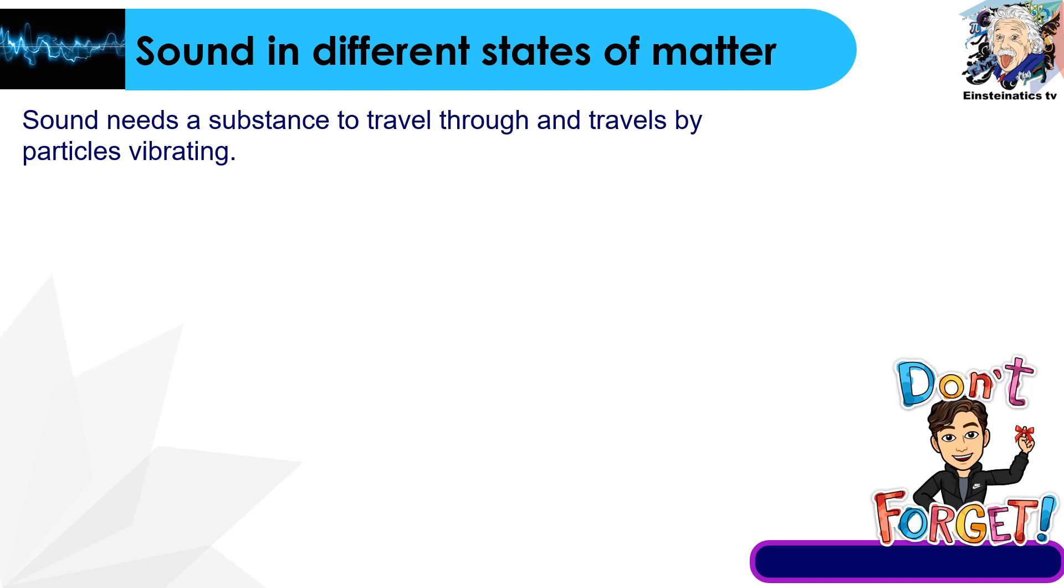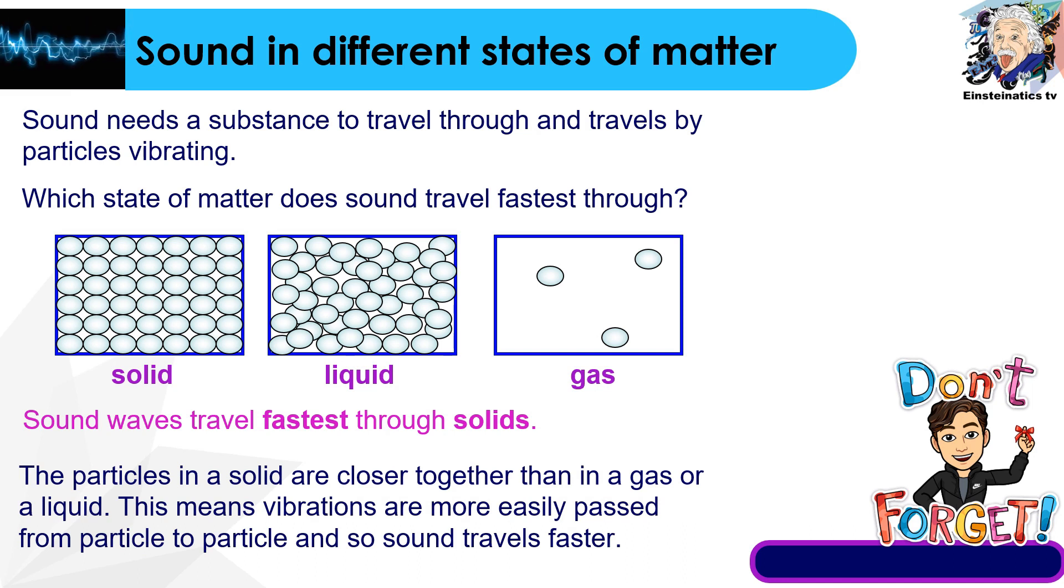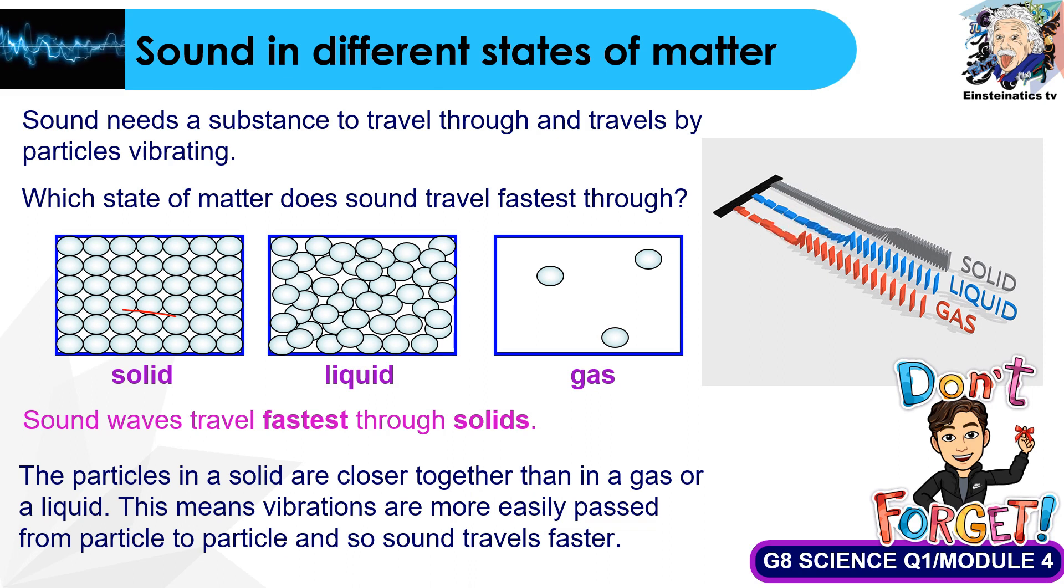Sound needs a substance to travel through and travels by particles vibrating. Which state of matter does sound travel fastest through? Solid, liquid, or gas? Sound waves travel fastest through solids because the particles in a solid are closer together than in a gas or liquid. This means that vibrations are more easily passed from particle to particle, so sound travels the fastest. Unlike in gas, where the particles are far apart, sound travels the slowest in air.